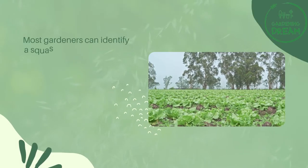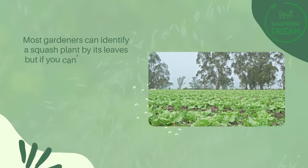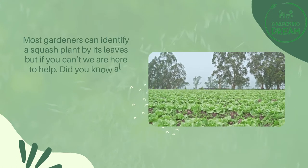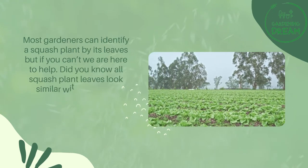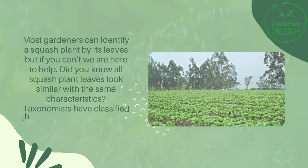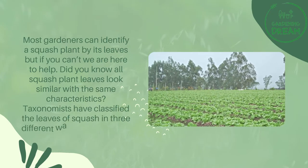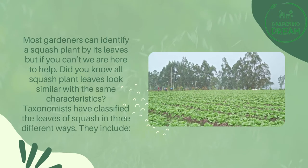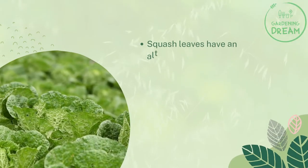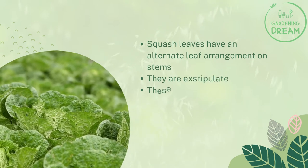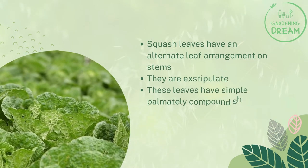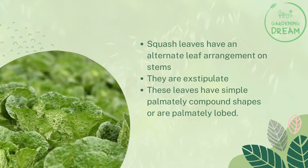Characteristics of squash leaves. Most gardeners can identify a squash plant by its leaves, but if you can't, we are here to help. Did you know all squash plant leaves look similar with the same characteristics? Taxonomists have classified the leaves of squash in three different ways: squash leaves have an alternate leaf arrangement on stems, they are exstipulate, and these leaves have simple palmately compound shapes or are palmately lobed.